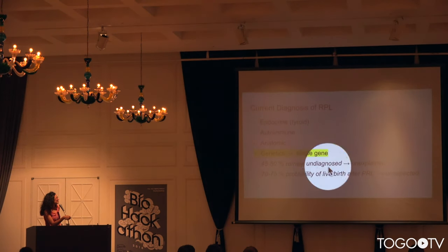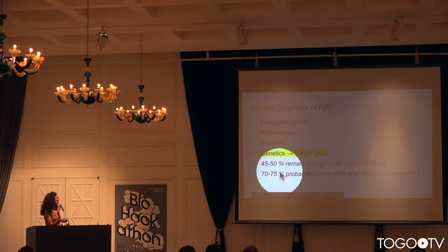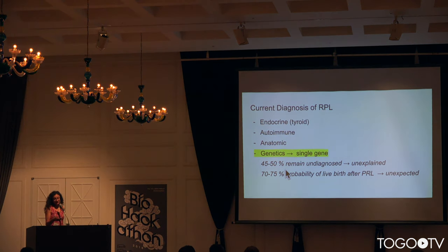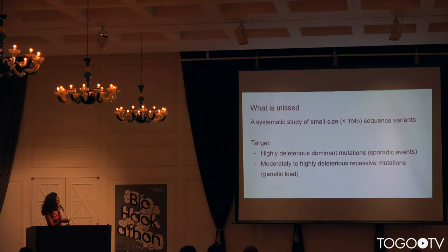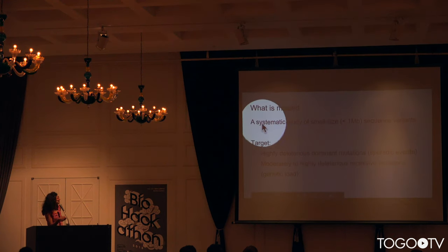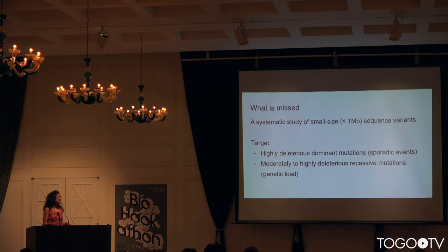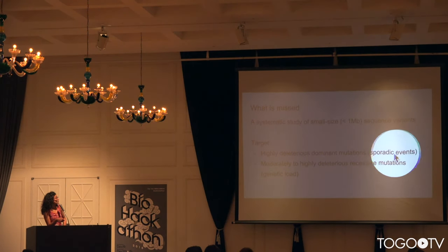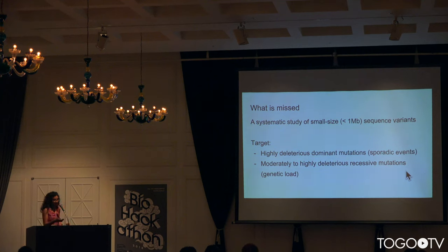However, a fraction of recurrent pregnancy loss remains undiagnosed. Interestingly, there is a 70–75% probability of live birth after recurrent pregnancy loss, which means there are genetic factors underlying. What is missed so far is a systematic study of small sequence variants, because normally people screen for large chromosomal abnormalities. Very few studies have investigated small variants systematically. We want to target both highly deleterious dominant mutations causing sporadic events, and moderately to highly deleterious recessive mutations that are part of the genetic load of human populations.